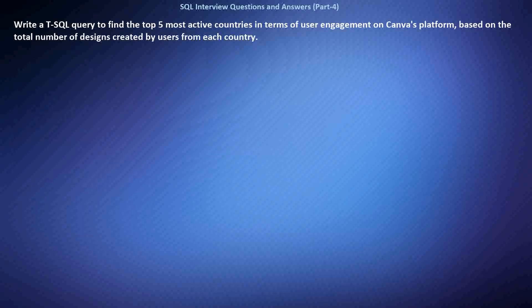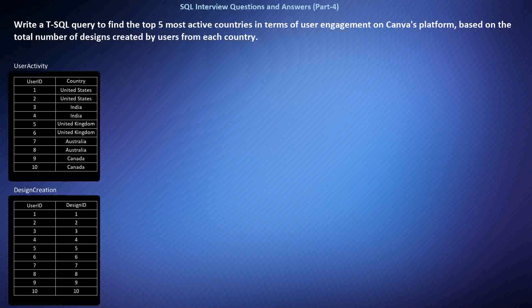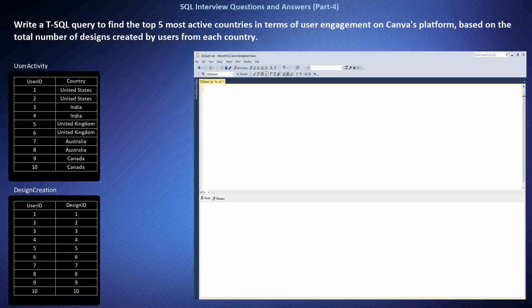Write a SQL query to find the top five most active countries in terms of user engagement on Canva's platform, based on the total number of designs created by users from each country. This requires querying a user table with country information and a design creation table. The SQL query joins the UserActivity and DesignCreation tables on user ID, orders results by total designs in descending order, and limits output to the top five countries.